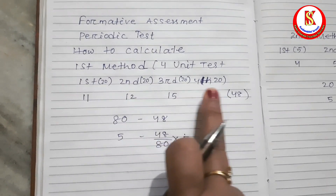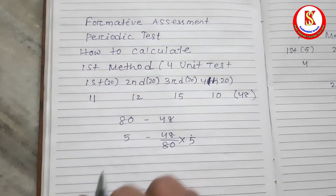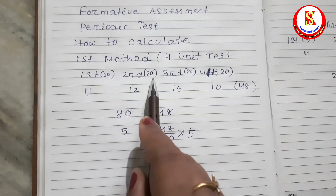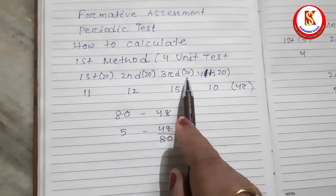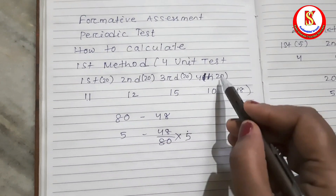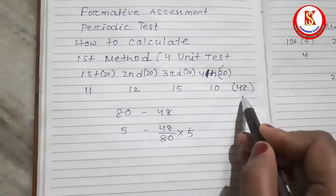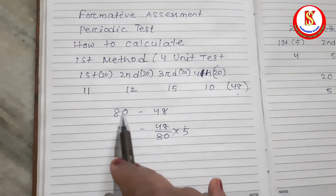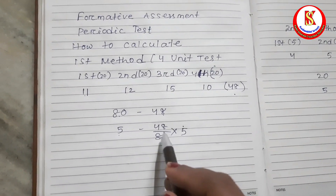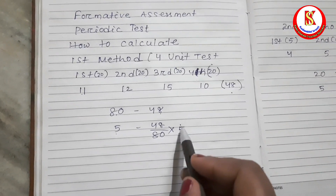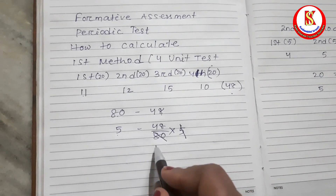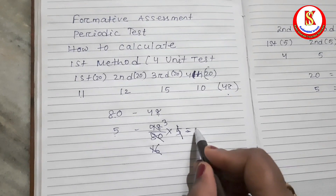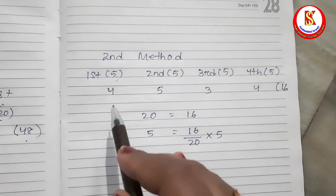As per the board rule, we have to conduct at least four unit tests. In Method 1, each test is out of 20. First test: child secures 11 out of 20; second: 12 out of 20; third: 15 out of 20; fourth: 10 out of 20. Total: 48 out of 80. To convert out of 5: 48 divided by 80 multiplied by 5 equals 3. So the child secures 3 marks out of 5.